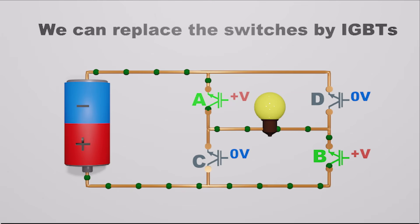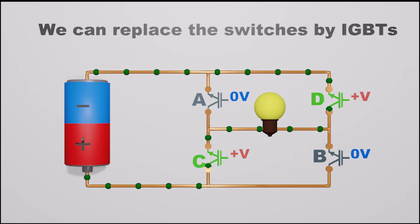Likewise, by turning on and off the IGBT switch pairs reverses the current direction. That means alternating current is generated.